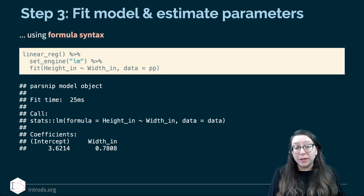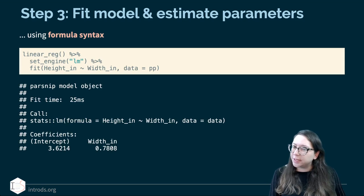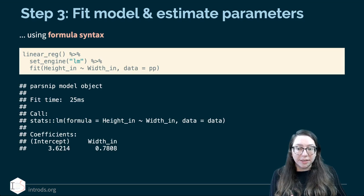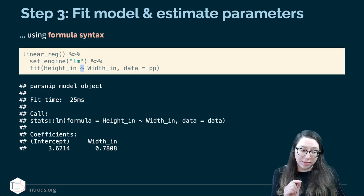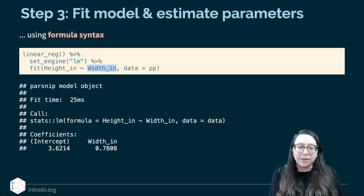Step three: we fit the model and estimate the parameters using formula syntax. This formula syntax is special to R and is used in many other places — we've seen it when defining facets for visualizations. In the third step, we're fitting a model: height versus width — whenever I see that tilde in the formula syntax, I read that as 'versus.' So height is on the y-axis versus width on the x-axis, and then I define the data, which is the Paris Paintings data.